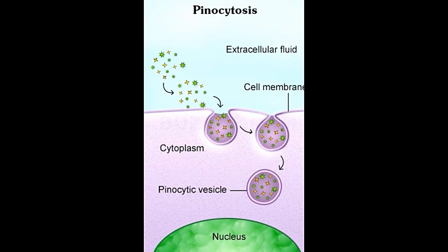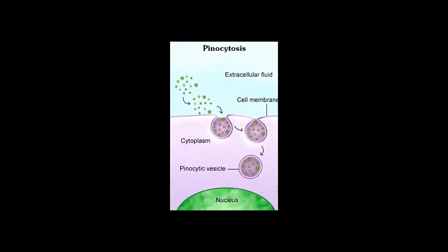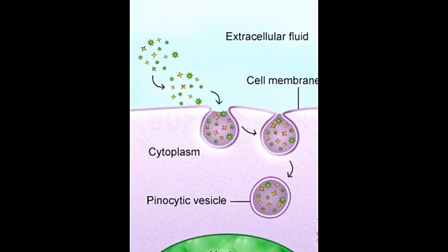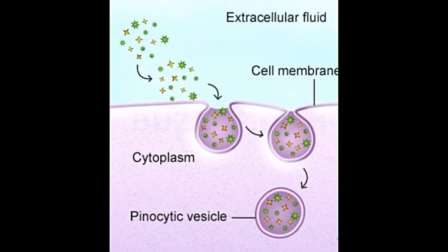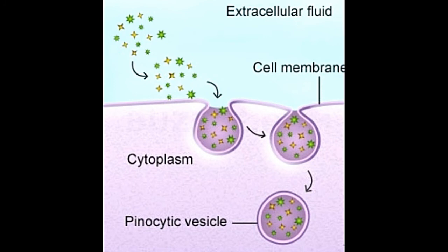Type of cells — Phagocytosis is performed only by special types of phagocytic cells. In higher animals, it is largely concerned with the elimination of foreign materials and pathogens. Pinocytosis is performed by all cells and is usually responsible for the uptake of solute molecules and smaller nutrients from the surrounding.